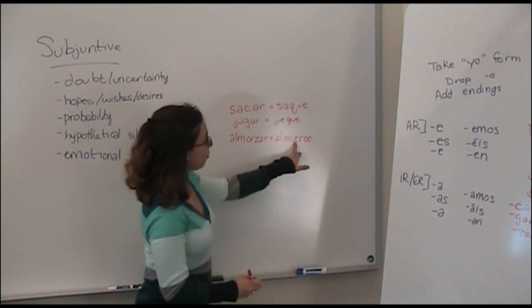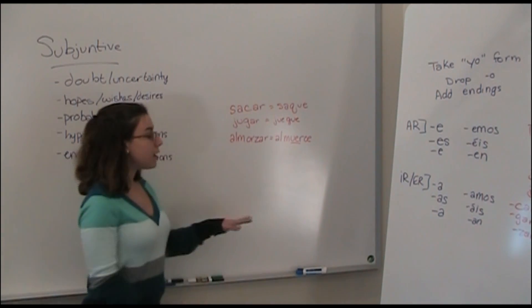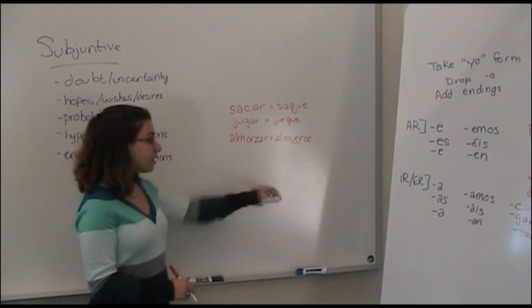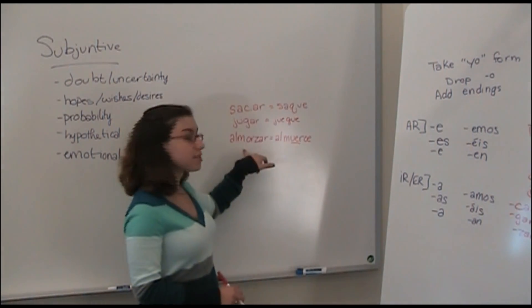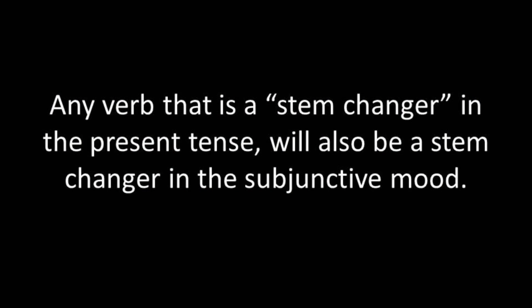And this as well, you have to be careful because it is a stem-changing verb. The way to memorize these stem-changing verbs is just to look at your present tense verb list. Anything that changes in the stem, like pensar, like almorzar, it's going to stem change in the subjunctive as well.